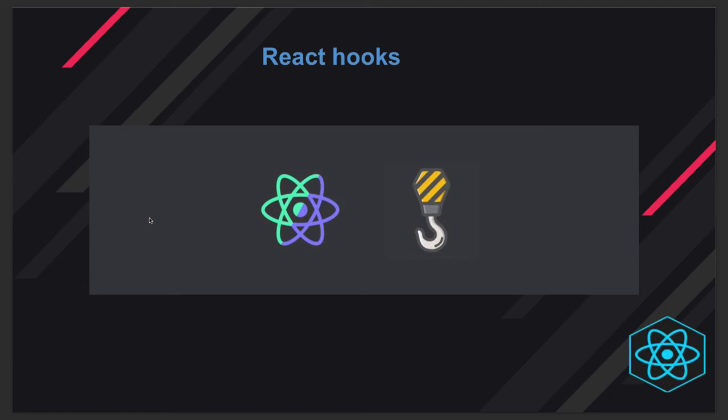I'm not saying to stop using class-based components, but now the difference is that functional components can also manage state, can have lifecycle mechanisms, and can do all the different things you were doing with class-based components. In the latest versions of React, features like React hooks, context APIs, and lazy loading are core features making functional components more powerful, primarily through the different types of hooks that have been added.